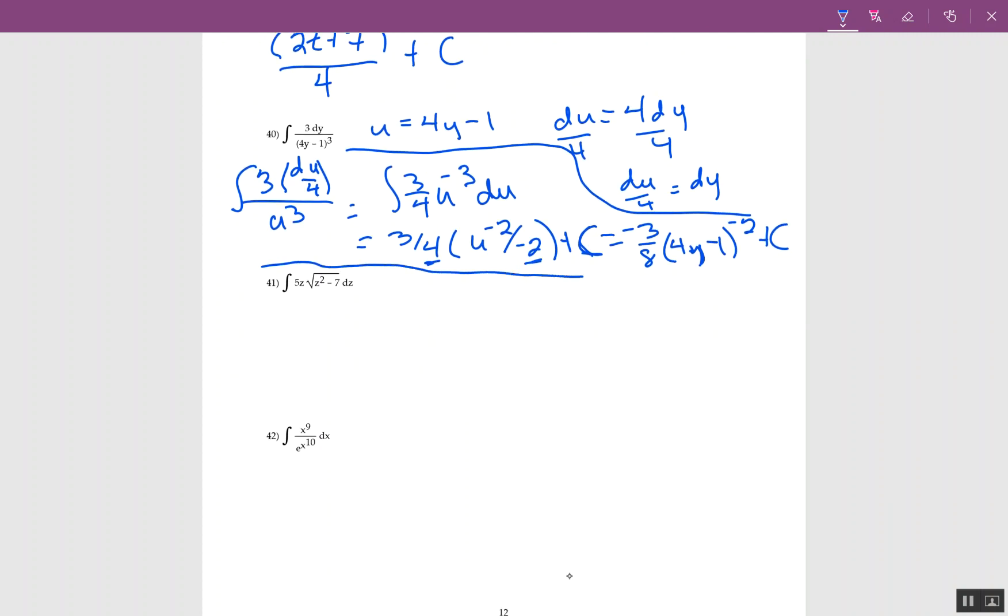The square root looks different but is the same thing, like having a parenthesis. If I rewrote it, the power would be 1/2. I know what's under the square root is z squared minus 7, that's my u. The derivative is 2z dz. I don't have a 2, so I'll divide by 2. My integral is 5, and z dz is du over 2. The z squared minus 7 is u, and the power is 1/2.